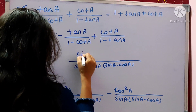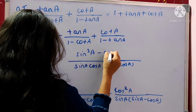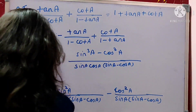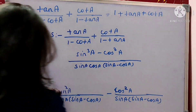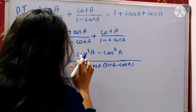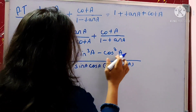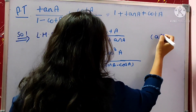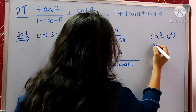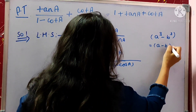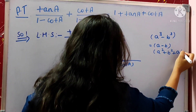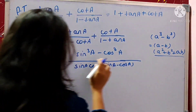After taking the LCM of sin A cos A (sin A minus cos A), we apply the identity: A cubed minus B cubed equals (A minus B)(A squared plus B squared plus AB). Here A is sin A and B is cos A. So the numerator becomes sin A minus cos A, times (sin squared A plus cos squared A plus sin A cos A), divided by sin A cos A (sin A minus cos A).